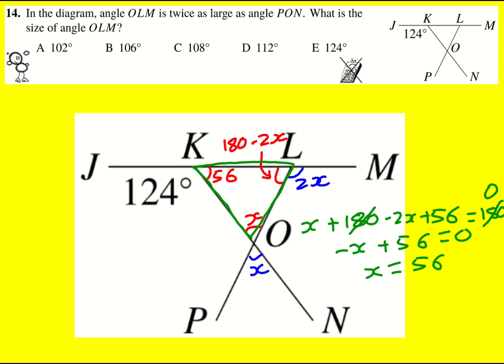Oh, I'm not quite done because I wasn't actually asked for that. I was asked for what OLM was. So that's my 2X. I would have been very tempted to write down 56 as my answer if it wasn't there as a multiple choice. I need to be more careful. Remember, that's what we're actually finding. So double it - it's going to be 112°. There we go.